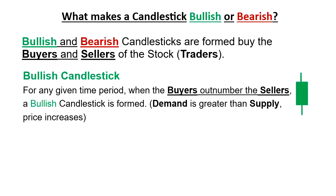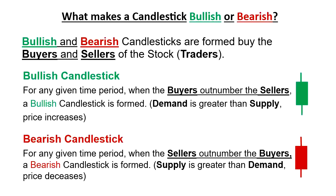So whenever the buyers are more than the sellers, prices increase and a bullish candlestick is formed. Now for a bearish candlestick: when the sellers outnumber the buyers, a bearish candlestick is formed — supply is greater than demand and prices decrease. So buyers more than sellers means bullish candlesticks are formed, and sellers outnumbering buyers means more supply than demand, so prices decrease and bearish candlesticks are formed.